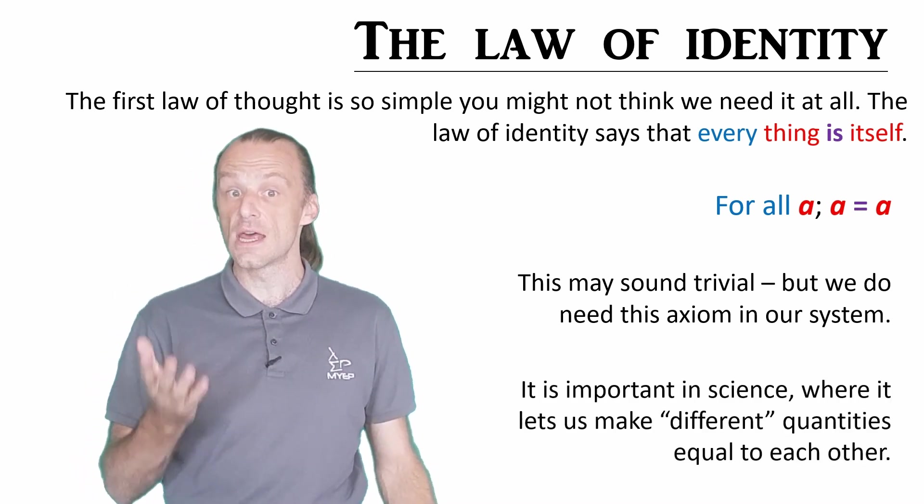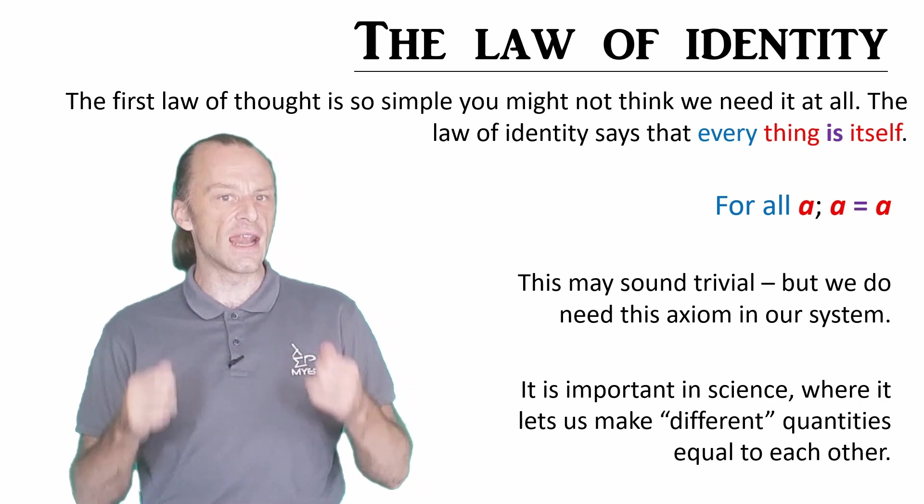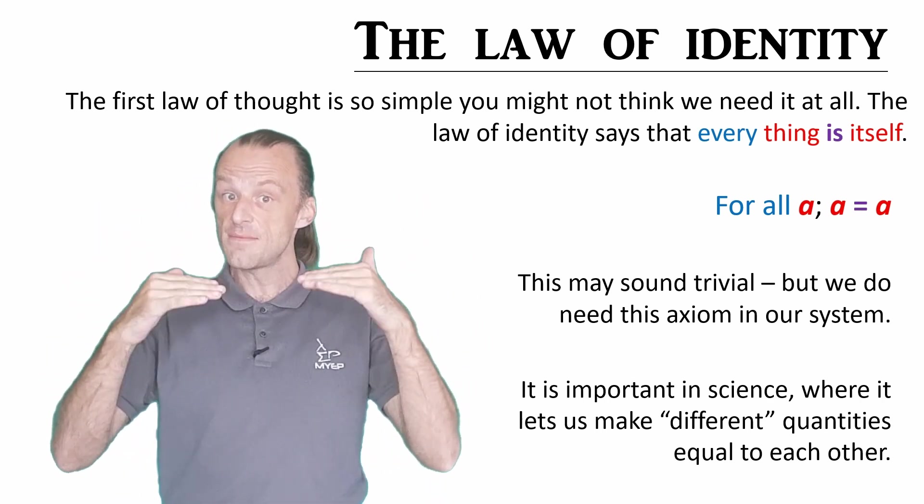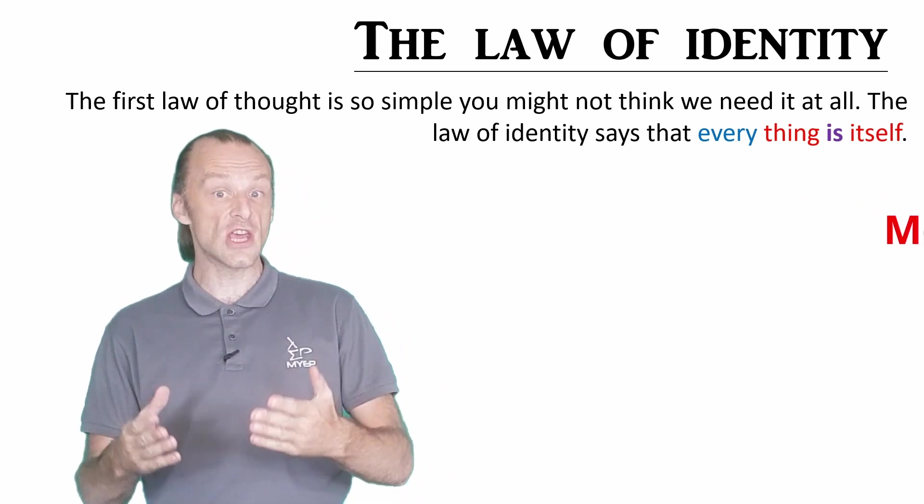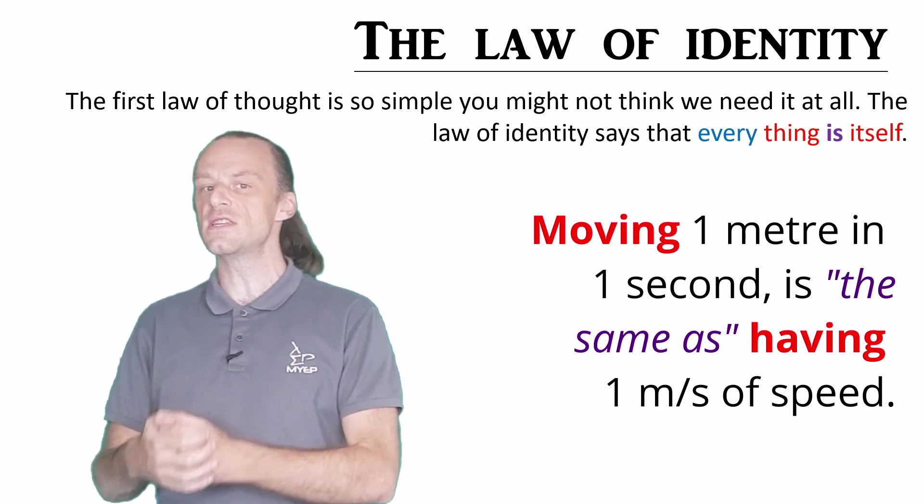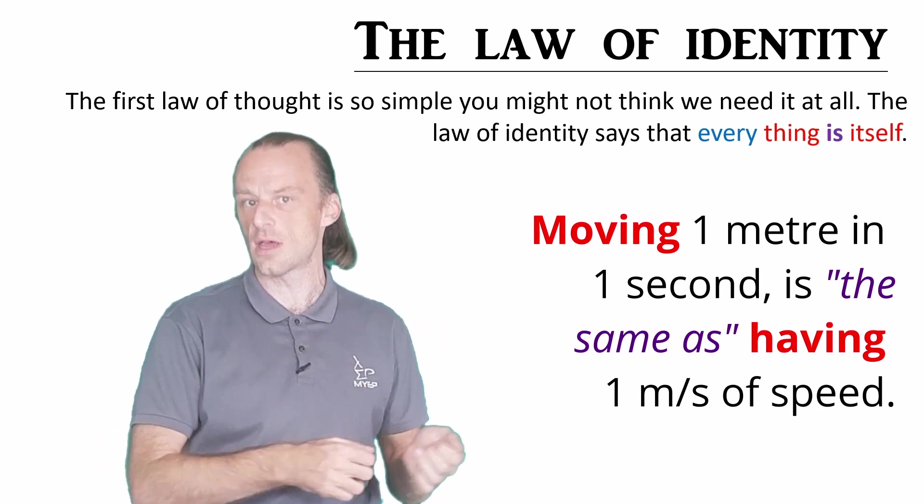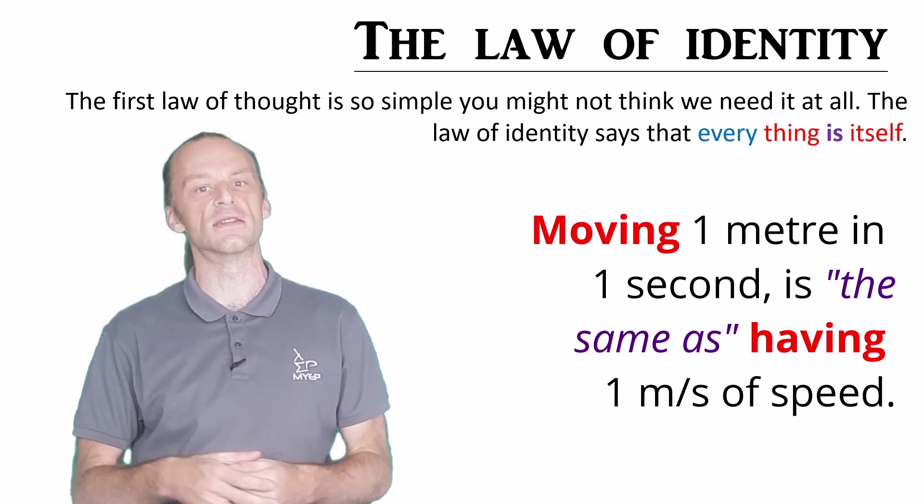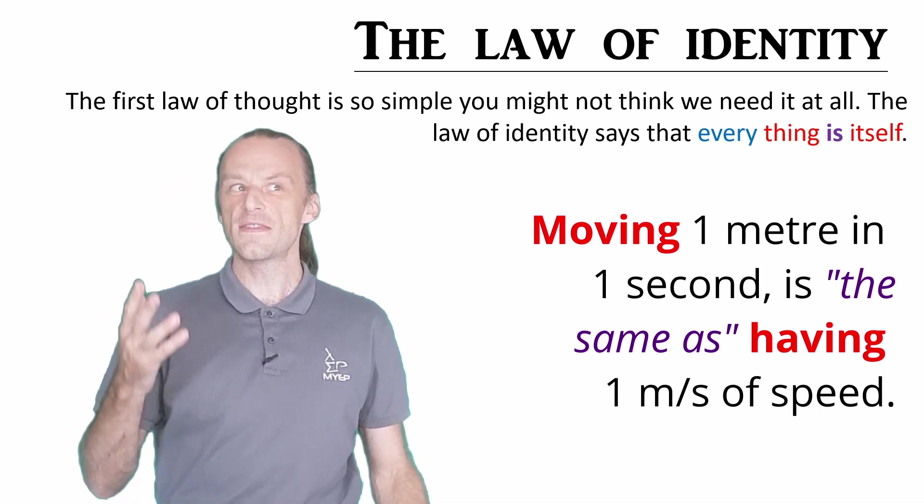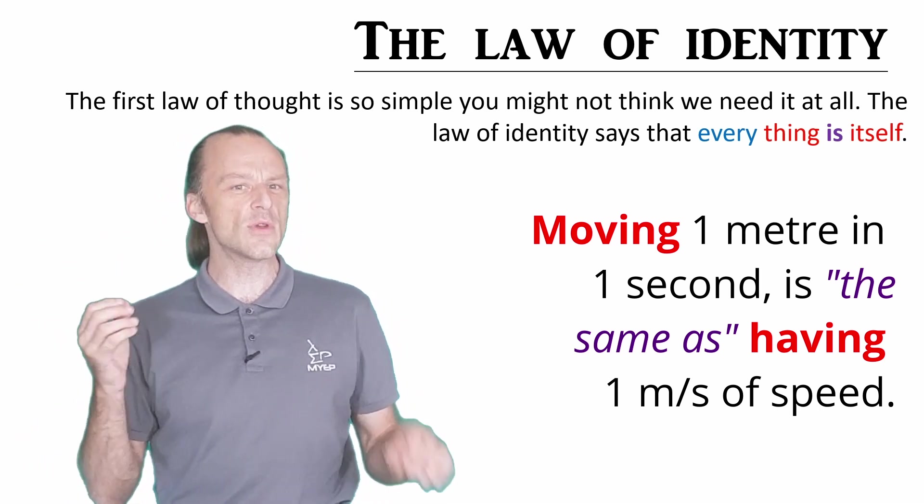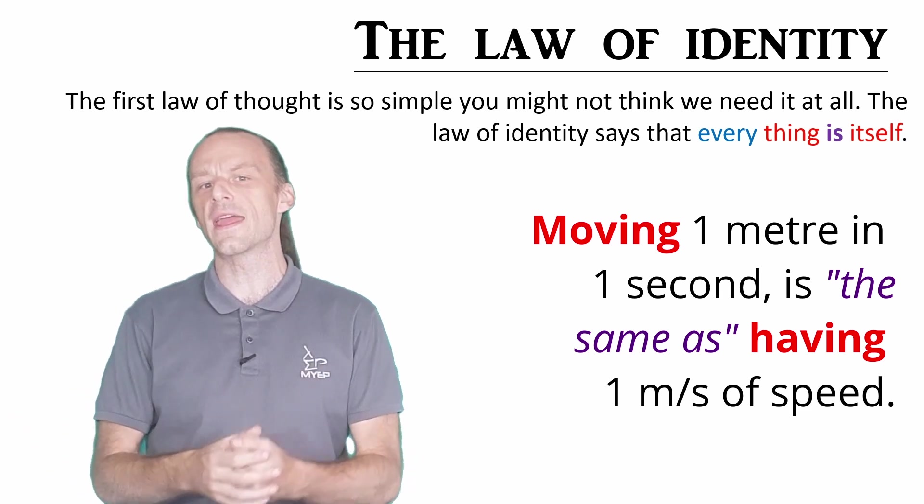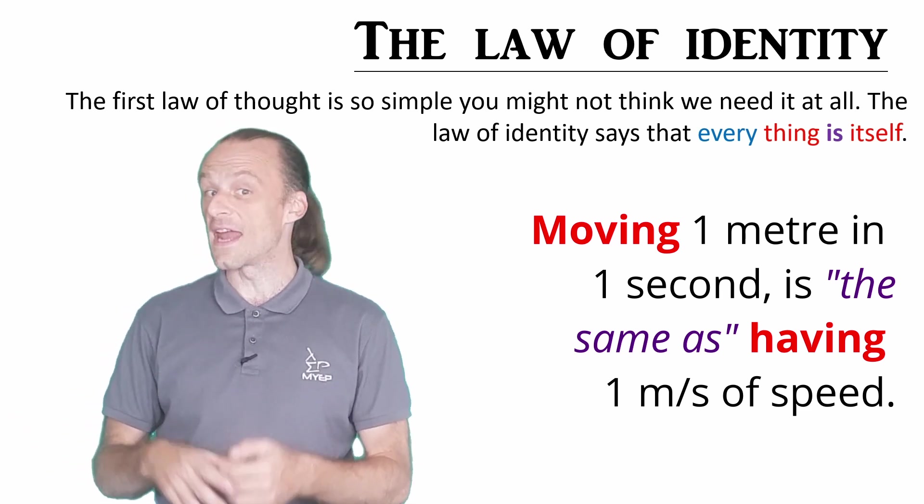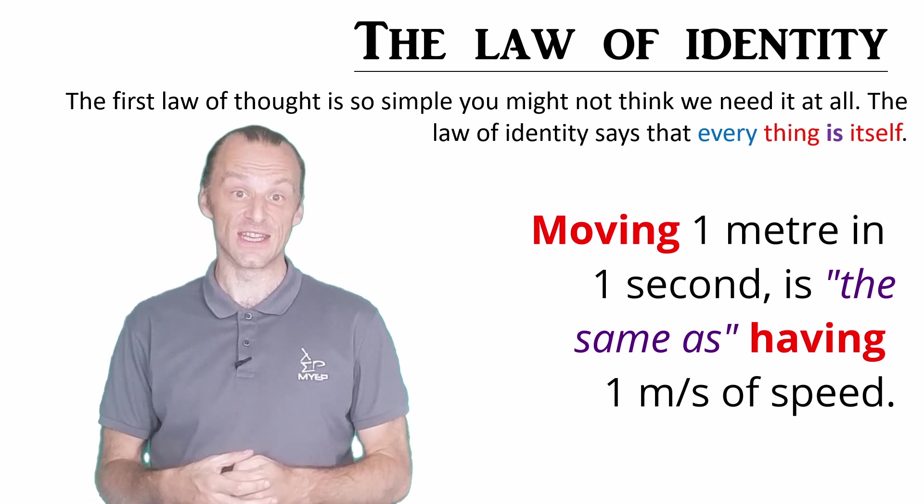Think about science. The law of identity allows us to say that two different quantities are the same thing for making equations. The object travels one meter of distance in one second of time. This is the same as having one meter per second of speed. Of course, they're kind of the same thing, but we use them in a different way to formalize our system of scientific equations, and it's the law of identity that allows us to do this.